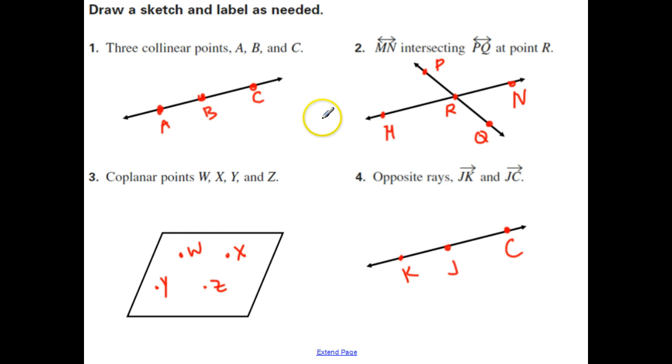So hopefully your answers look something like mine. It might look a little different and still be correct, but the main thing should be there. Points A, B, and C together on a line. Line MN, line PQ intersecting at point R. Points W, X, Y, and Z together on one plane. You could have used the corners, like in that one example with the box. That's fine. And opposite rays, JK and JC. Now, with this, point J has to be in the middle, and then K and C on either side.